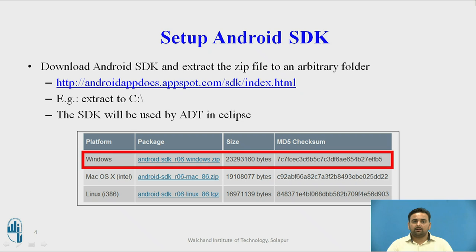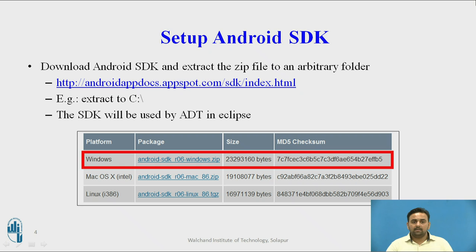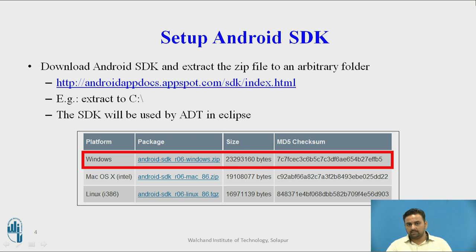For Android SDK setup, you can download the Android SDK, which is freely available on the internet. The download link is shown on the screen. You just have to download it, then extract it to your C drive as shown in the image. According to your platform and device, you can extract and install it.